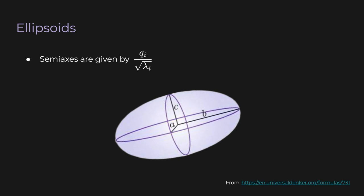The semi-axes of the ellipsoid are given by each eigenvector divided by the square root of the corresponding eigenvalue. Since A is positive definite, all eigenvalues are positive, so the square roots are always defined. If the matrix were only positive semidefinite, an eigenvalue could be zero, we'd be dividing by zero, corresponding to a semi-axis of infinite length — the shape wouldn't be bounded in that direction. That's why we strictly require positive definiteness.